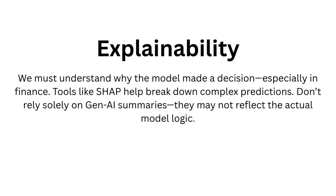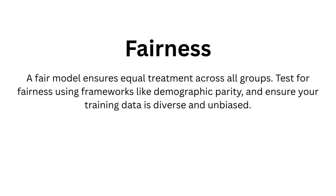We must also understand why the model made a decision, especially in finance. Tools like SHAP help break down complex predictions. Do not rely solely on Gen AI summaries, as they may not reflect actual model logic. A fair model ensures equal treatment across all groups — test for fairness using frameworks like demographic parity and ensure your training data is diverse and unbiased.